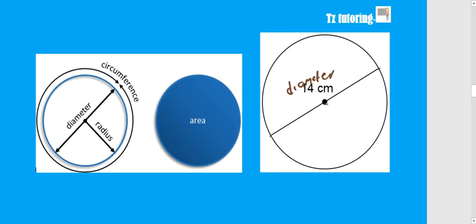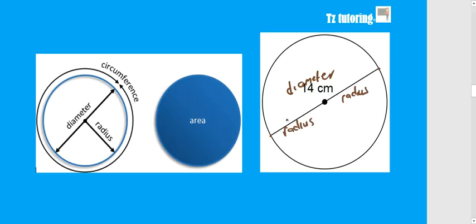The distance from the center to the end of the circle is called the radius. So if the diameter is 14, then your radius would be 7, because 7 centimeters plus 7 centimeters gives you 14.